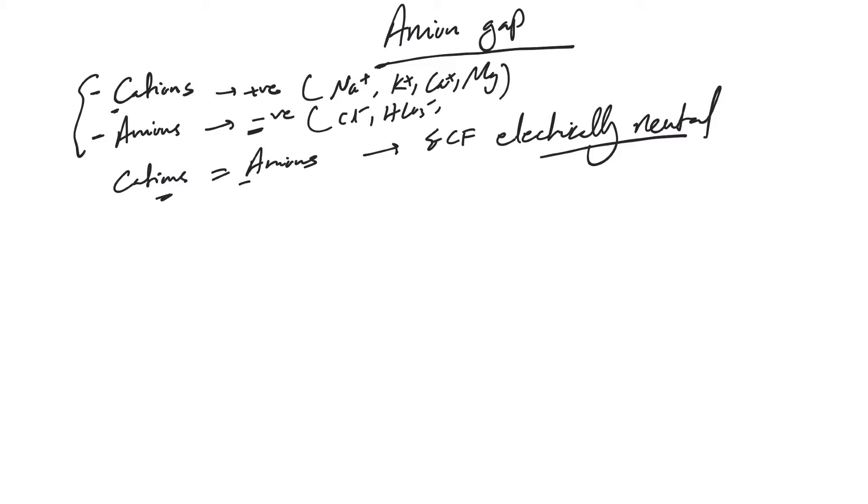These at any moment should be equal to each other and cancel each other - positive and negative charges. So we have sodium on one hand, the major cation, and we have chloride and bicarb on the other hand, major anions. But we see there are some other extra anions and cations.